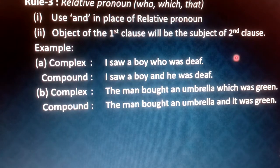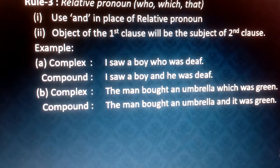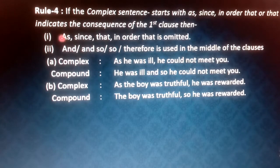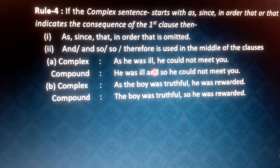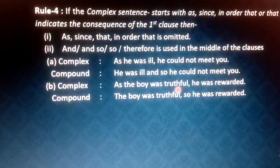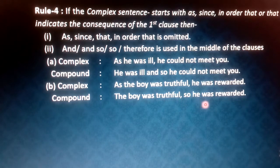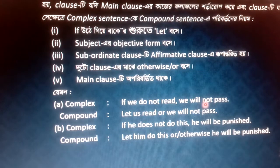If you get relative pronouns — who, which, that — for example: 'I saw a boy who was deaf' becomes 'I saw a boy and he was deaf.' 'The man bought an umbrella which was green' becomes 'The man bought an umbrella and it was green.' Also, if you see 'as,' 'since,' or 'in order that' and the second clause indicates the consequence of the first clause, use 'and so.' For example: 'As he was ill, he could not come' becomes 'He was ill and so he could not come.' 'As the boy was truthful, he was rewarded' becomes 'The boy was truthful and so he was rewarded.'